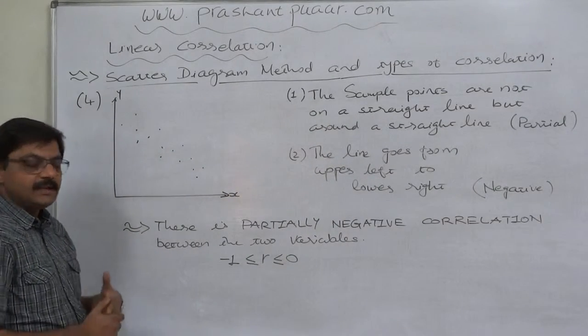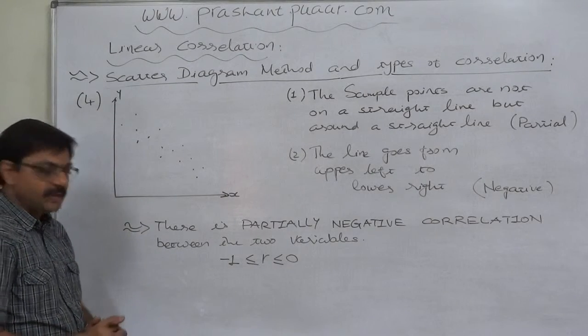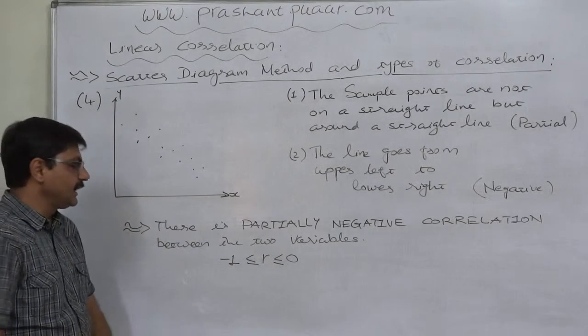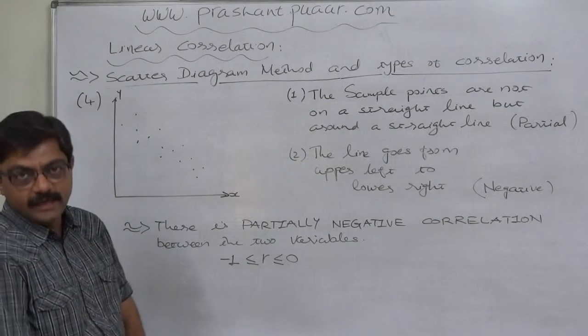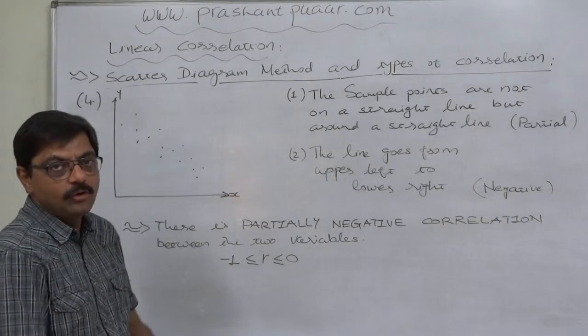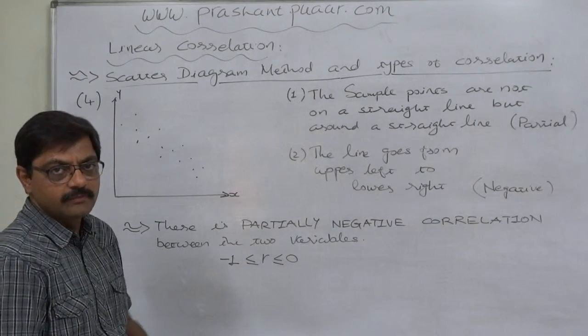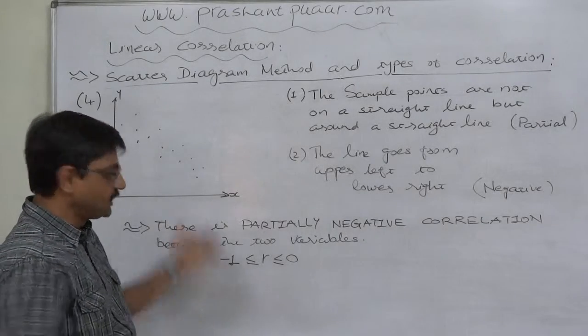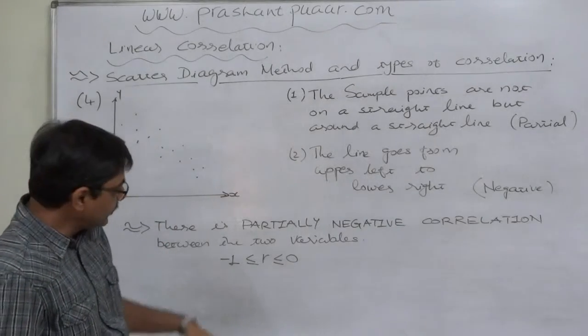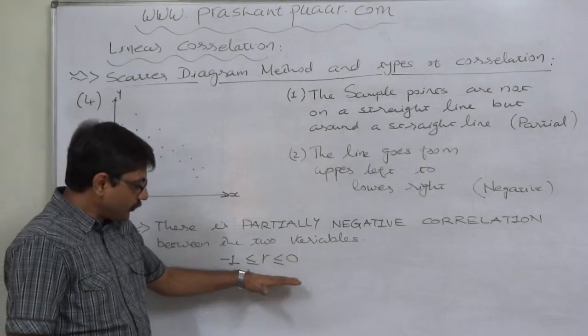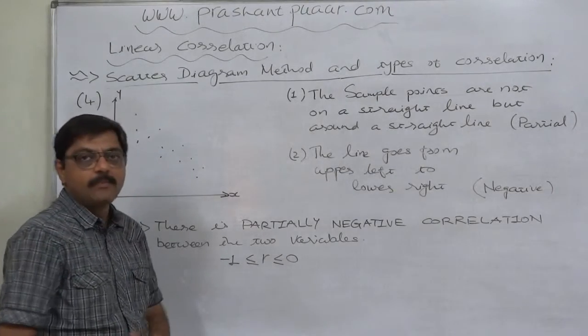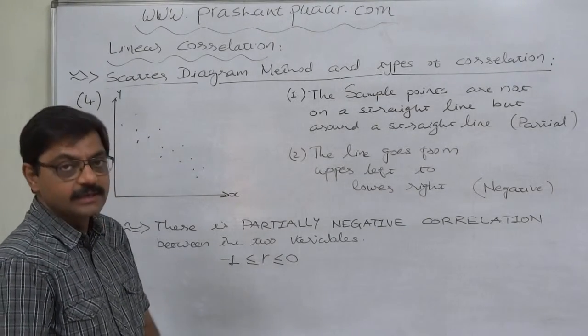So ultimately, in this type of case, we can conclude there is a partially negative correlation between the two variables. If we calculate the coefficient of correlation for such data, we get a value between 0 and -1.